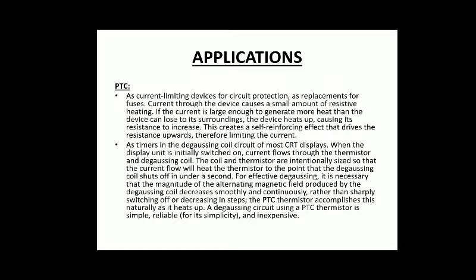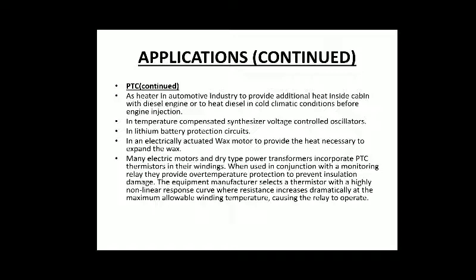Second, PTC thermistors are used in the degaussing coil circuits of CRT displays. When the display is switched on, current flows through the thermistor and degaussing coil. The thermistor heats up, causing the degaussing coil to switch off within a second. For effective degaussing, the alternating magnetic field must decrease smoothly and continuously rather than sharply switching off, which the PTC thermistor accomplishes naturally as it heats up and its resistance increases.